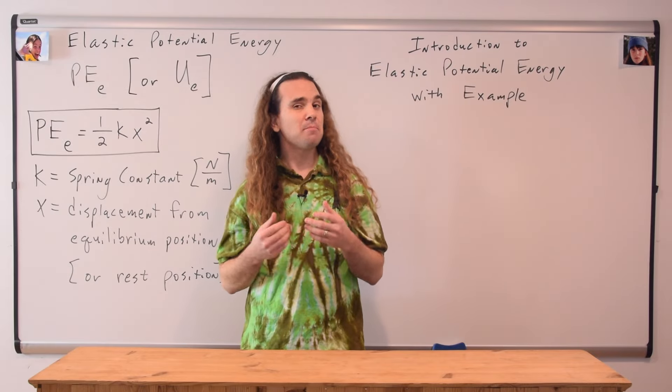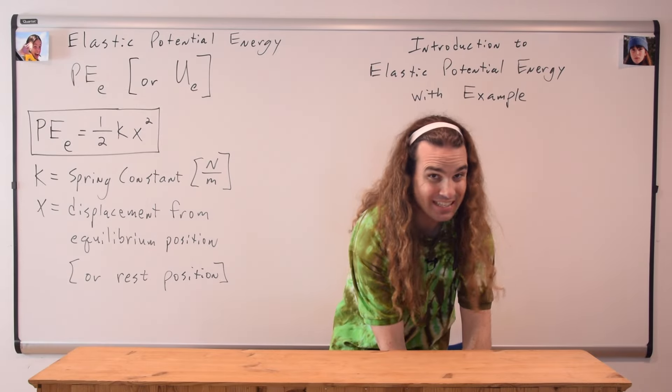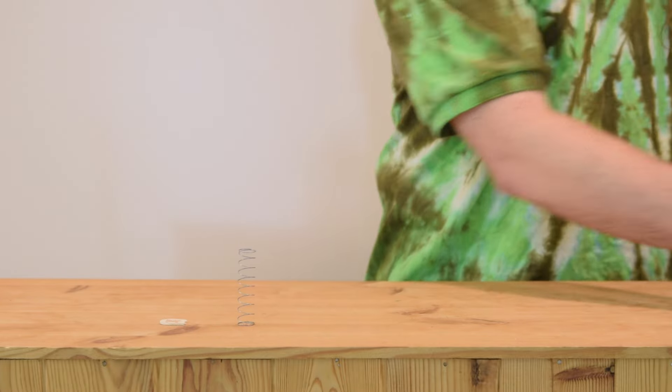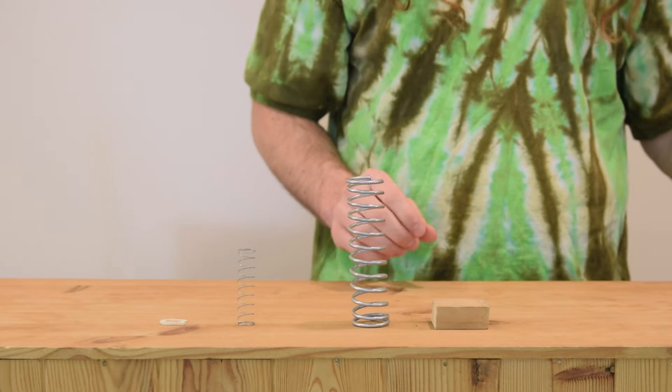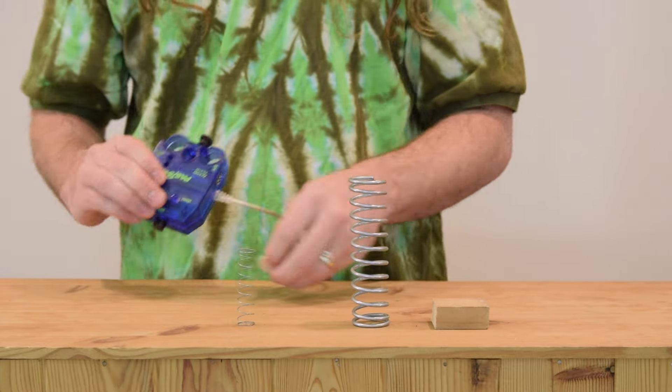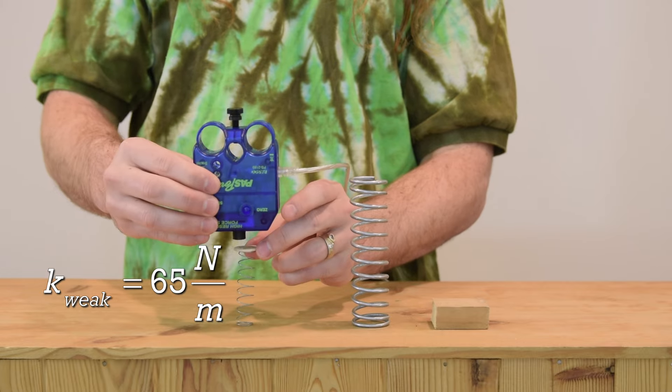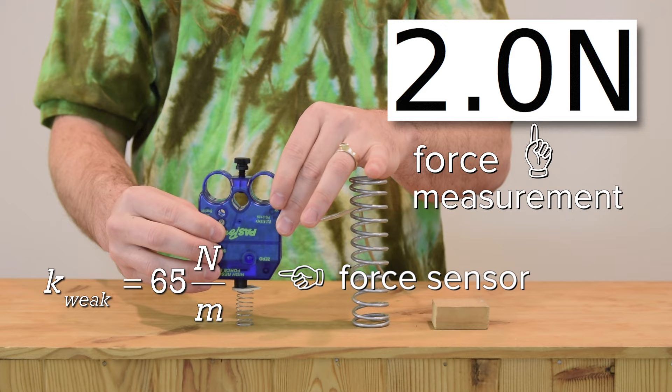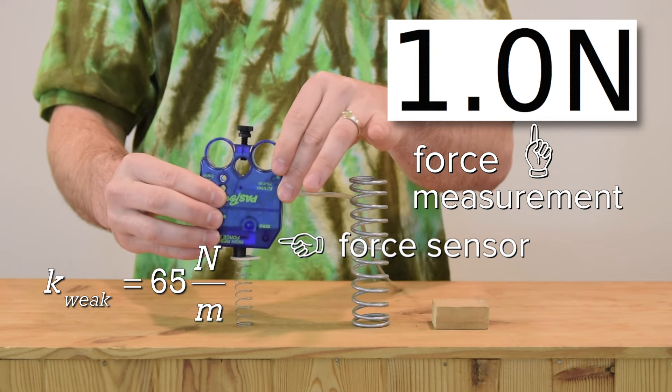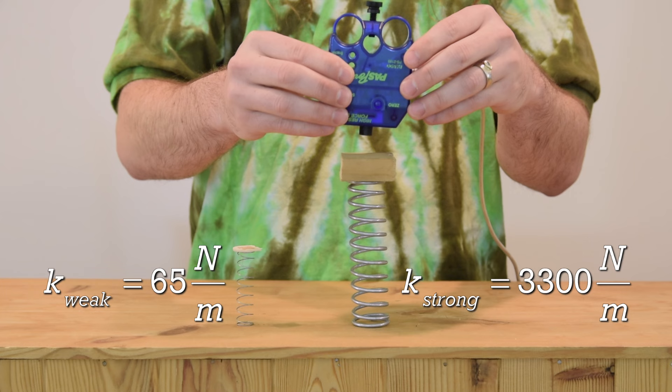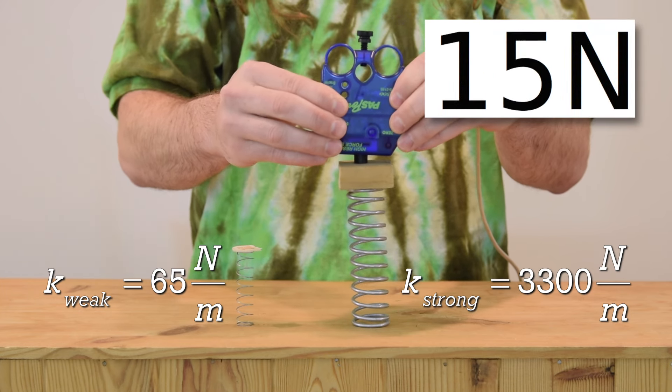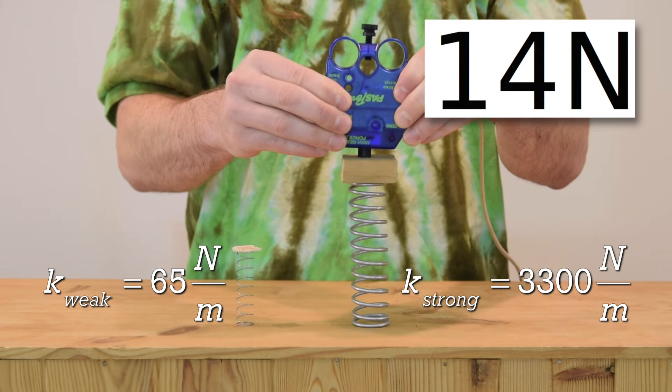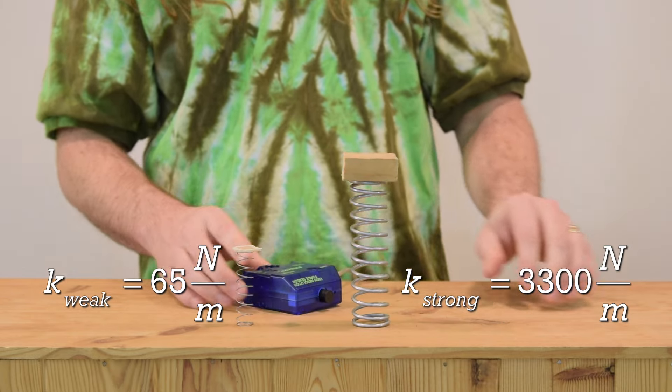The spring constant is a measurement of how much a spring resists displacement. More specifically, the spring constant is how much force it takes to compress or expand the spring per meter. For example, this weak spring has a small spring constant of about 65 newtons per meter because it takes very little force to compress it. And this strong spring requires a lot more force to compress it because it has a large spring constant of about 3,300 newtons per meter.